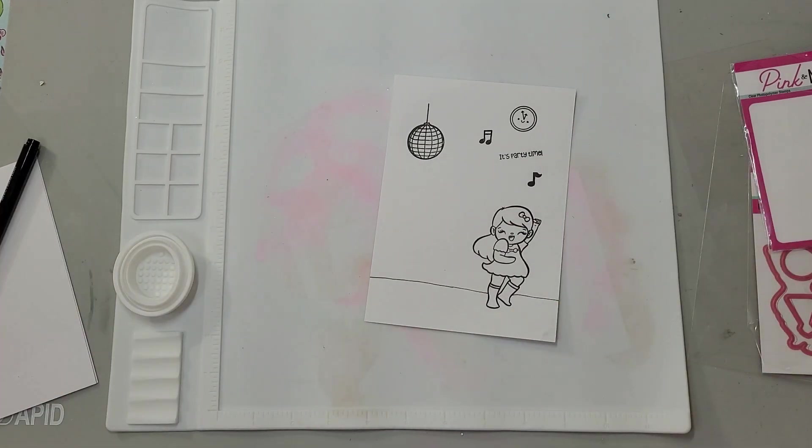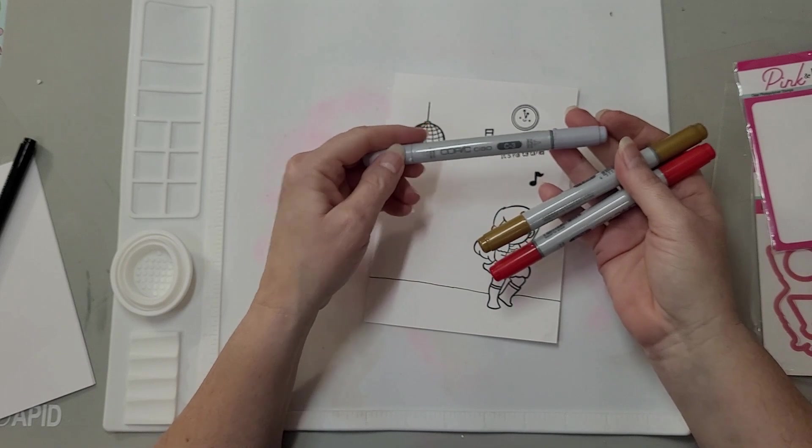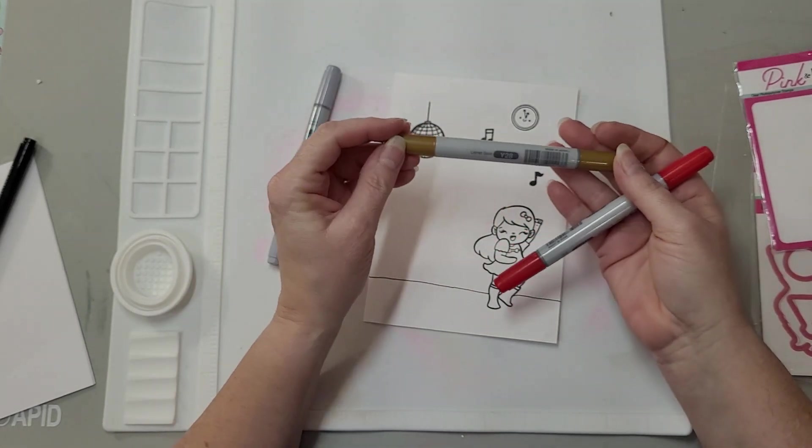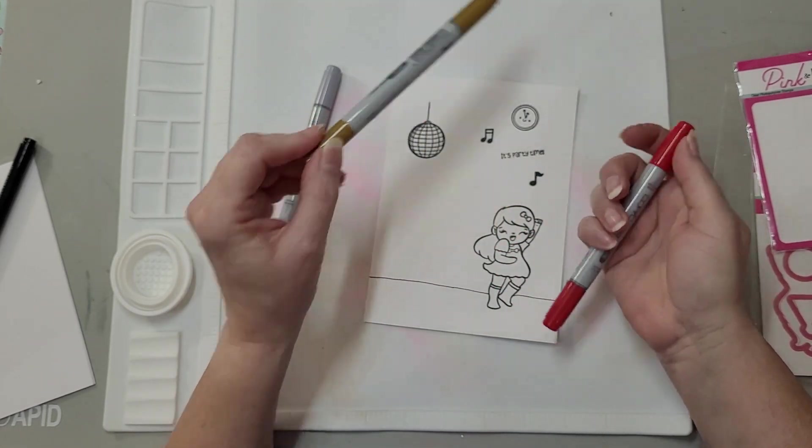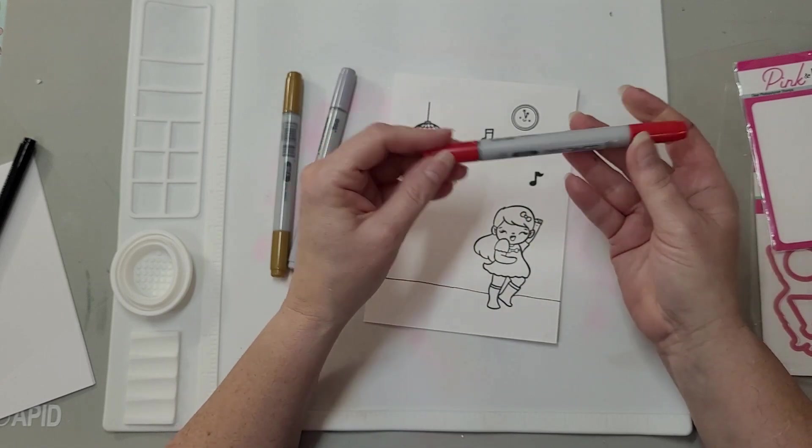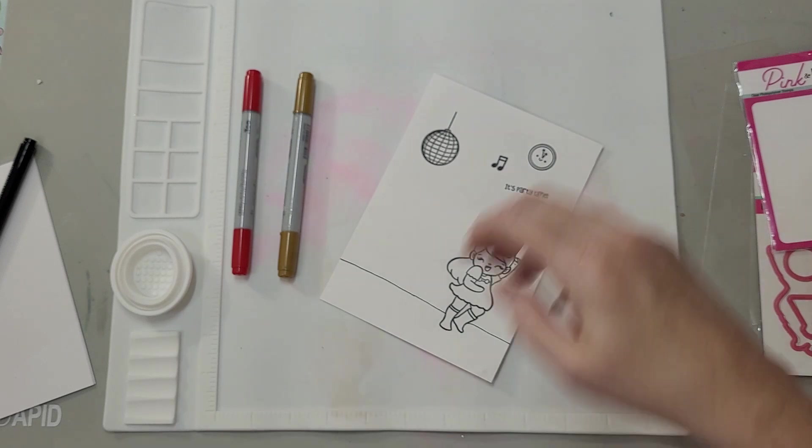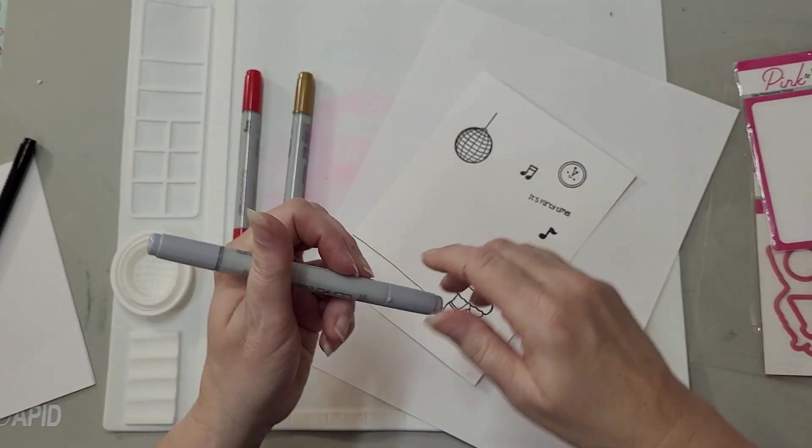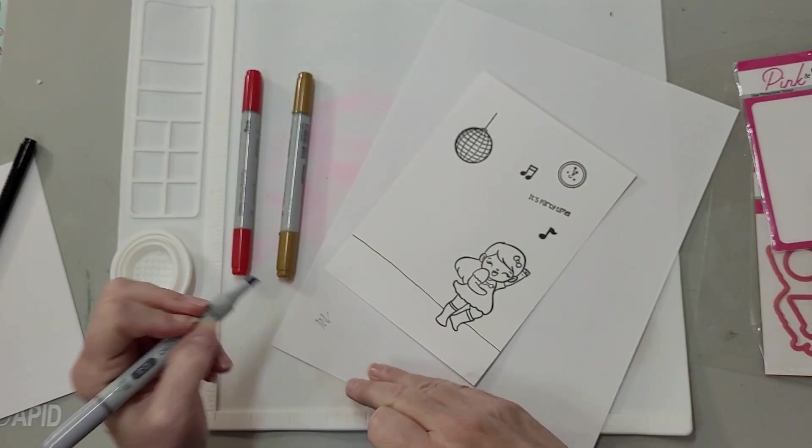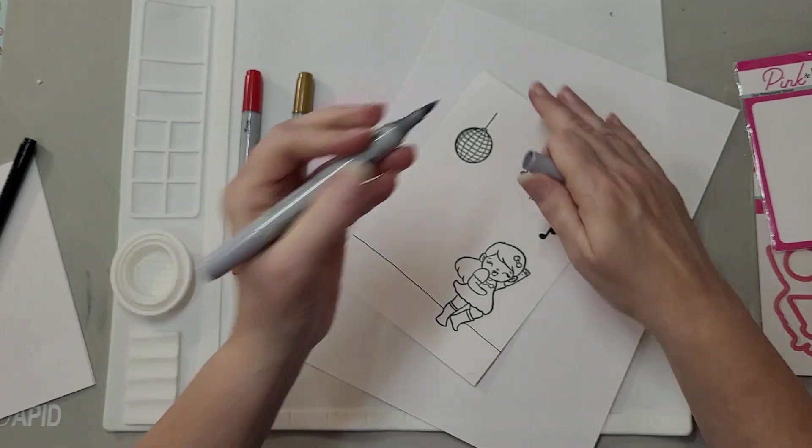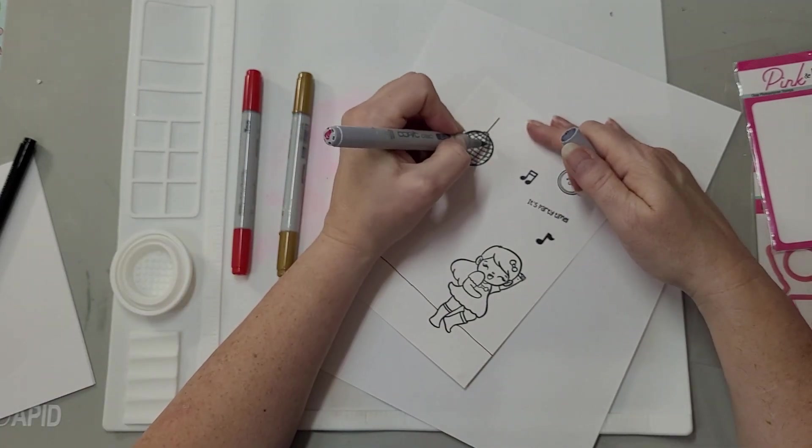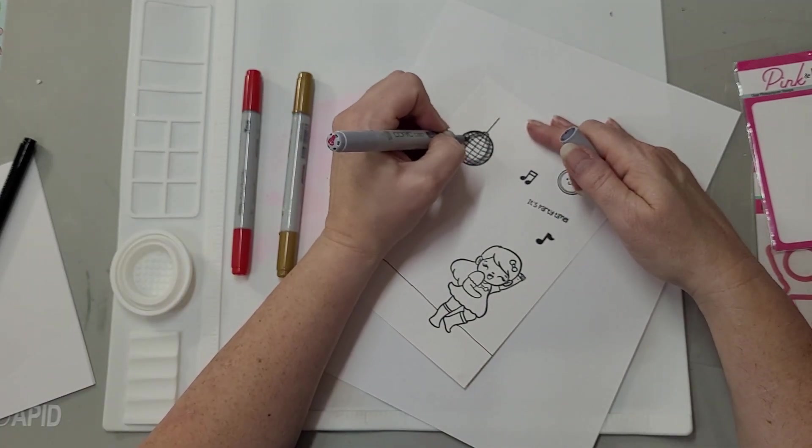Now let me color this in. Alright, so I'm going to use C3 for the gray or silver. I have Y28 which looks very much like gold when you color that, and I may use R29 for a pop of color.